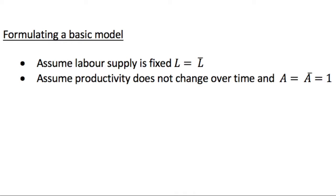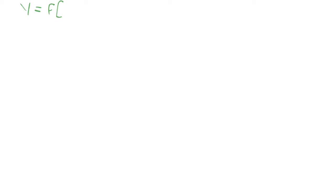We're going to start by formulating a basic version of the Solow model. We'll assume that the population equals the labour force, that the labour supply is fixed — so L equals L-bar — and that productivity does not change over time, so parameter a equals a-bar. To simplify further, we'll set a-bar equal to one. With these assumptions, we can write our production function as y equals a function of capital and our fixed labour supply L-bar.